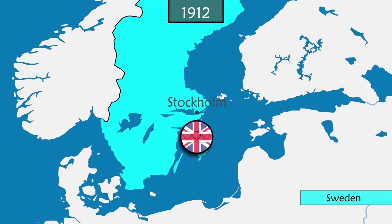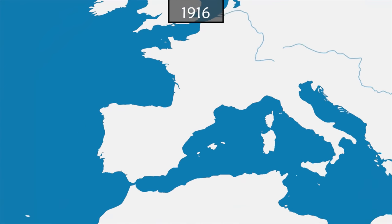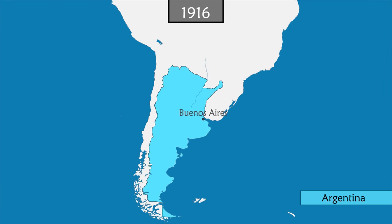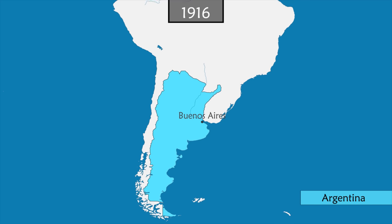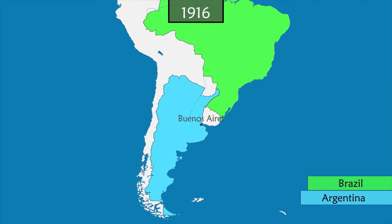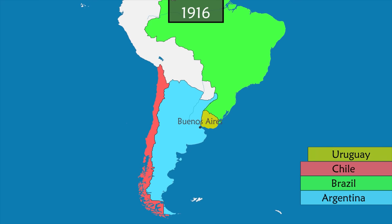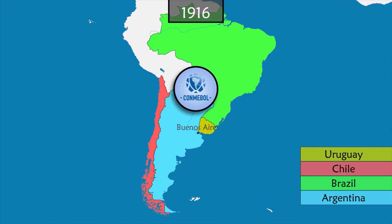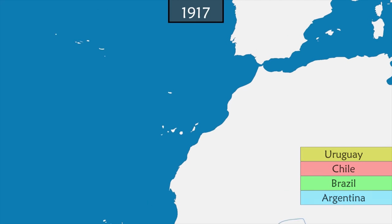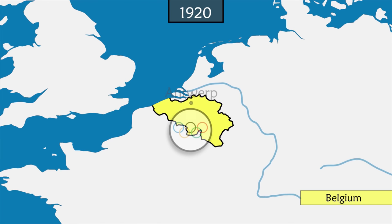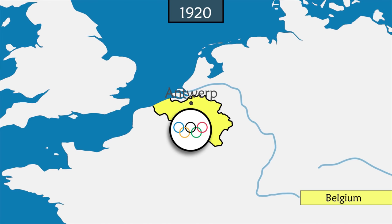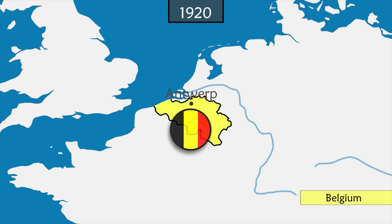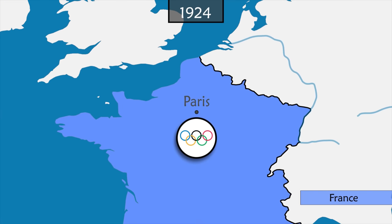In 1912 at the Olympic Games in Stockholm, England wins again. In 1916, during World War One, Argentina celebrates its 100 years of independence by organizing a football tournament with Brazil, Chile, and Uruguay. On this occasion, CONMEBOL — the first continental confederation — is founded. In 1920 during the Antwerp Olympic Games, in which Egypt is the first non-European country to participate, Belgium wins.